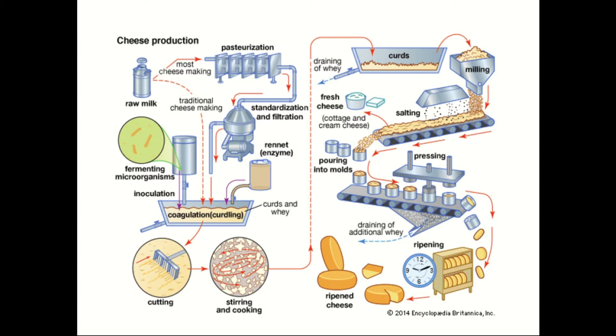Cheese making has long been considered a delicate process. The general cheese processing steps are: standardize milk, pasteurization of milk, cool milk, inoculate with starter and non-starter bacteria, add rennet and form curd, cut curd and heat. Then drain whey, texture curd, dry salt or grind, form cheese into block, store and age, and the last step is packaging.